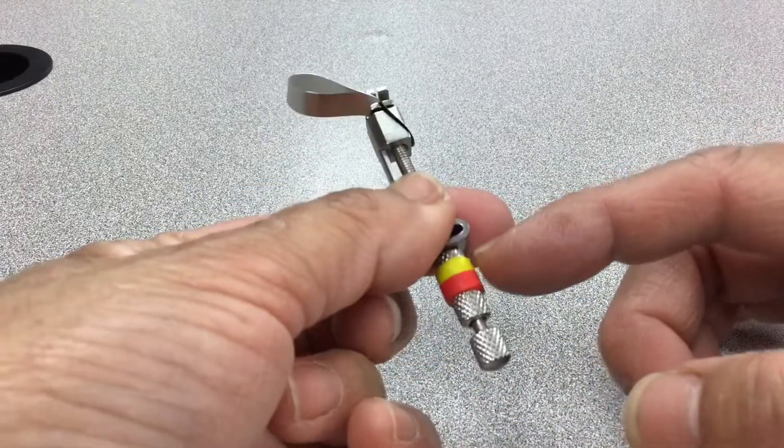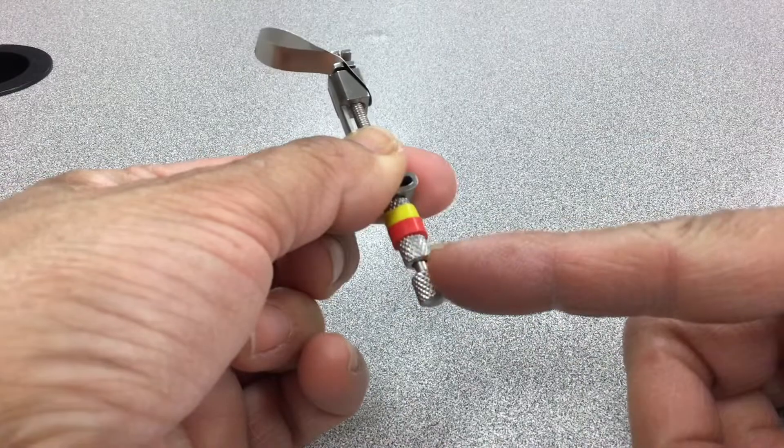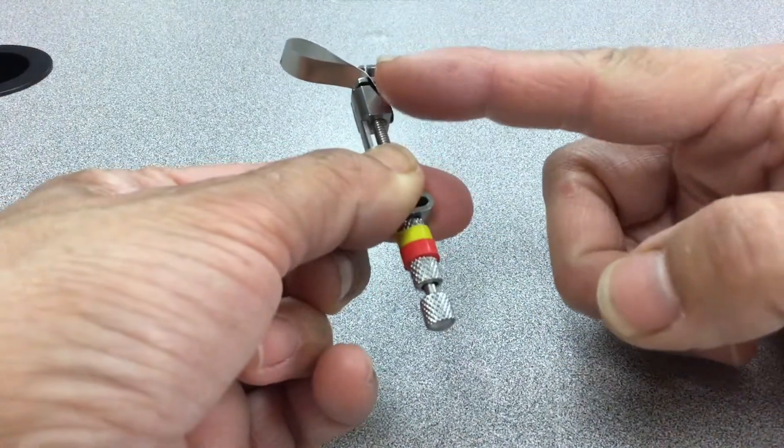So this tightens it to go around the tooth. This tightens the band onto here.